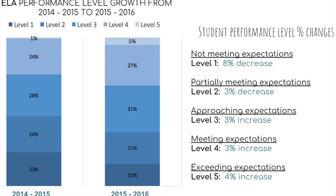The ELA performance level growth from 2014-15 to 2015-16 shows that at level 1, students not meeting expectations, there was an 8% decrease. At level 2, students partially meeting expectations, there was a 3% decrease. At level 3, approaching expectations, there was a 3% increase. For both level 4, meeting expectations, and level 5, exceeding expectations, there were significant growths of 3% and 4% respectively.